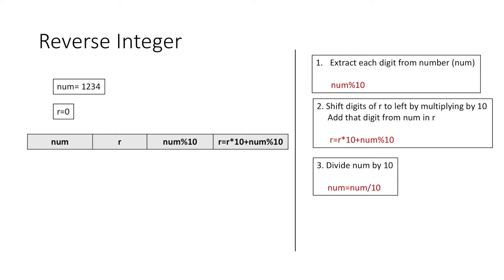So we create a table where firstly the value of num is 1 2 3 4 and the value of r is 0. Then we extract the last digit from num by taking its modulus with 10. So we get the digit 4, and then we multiply r by 10 and add this digit to r. So now the value of r is 4.